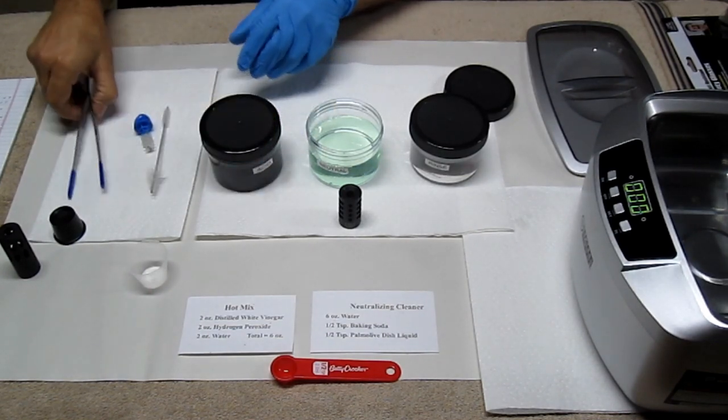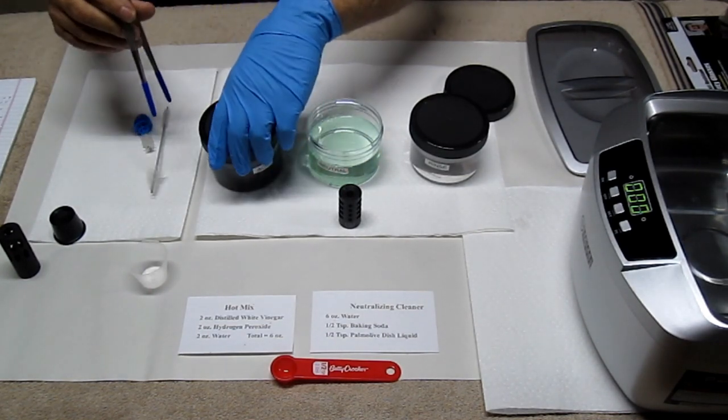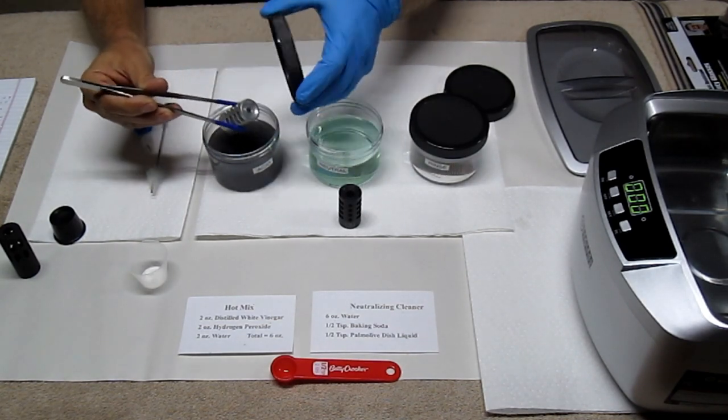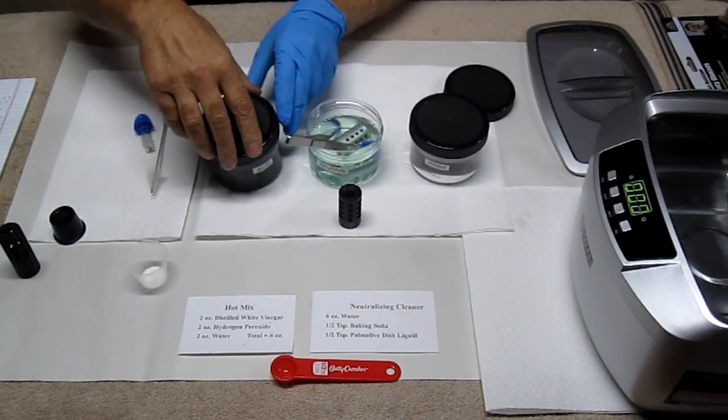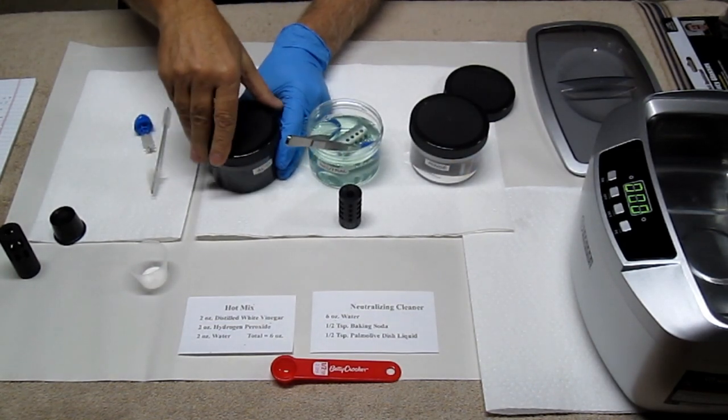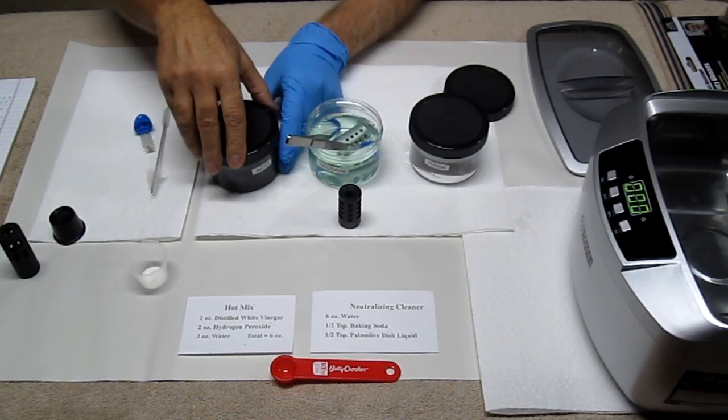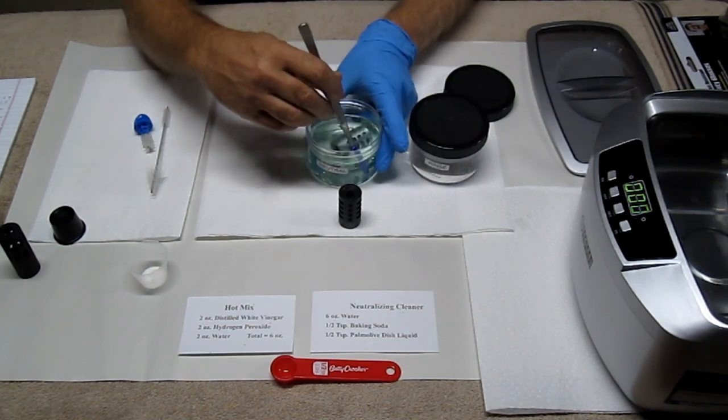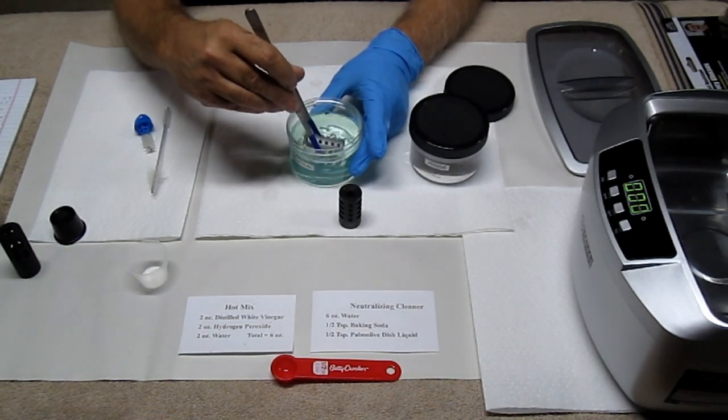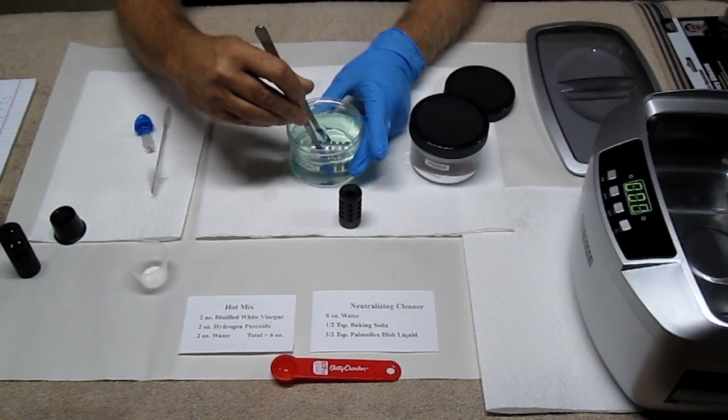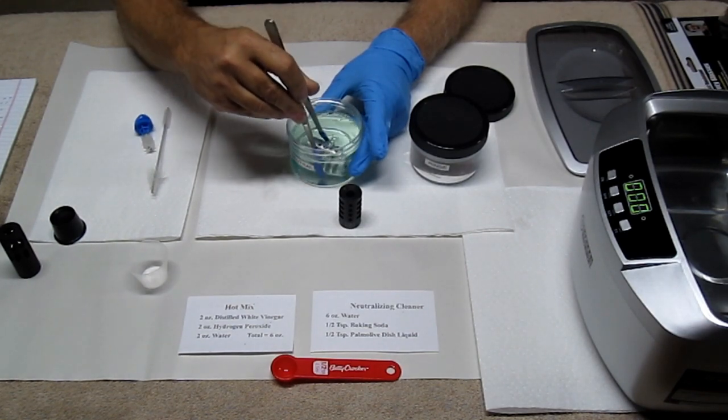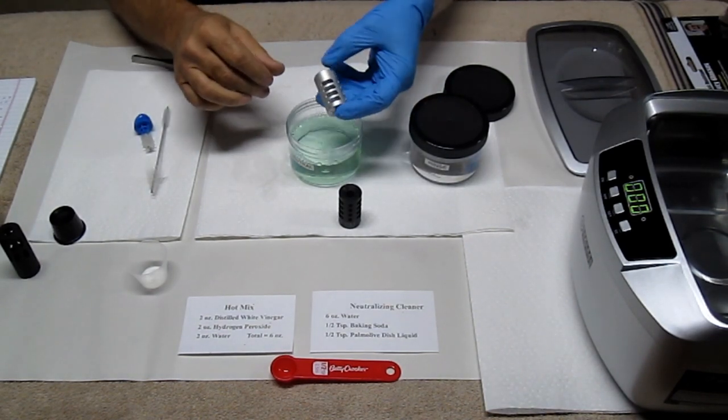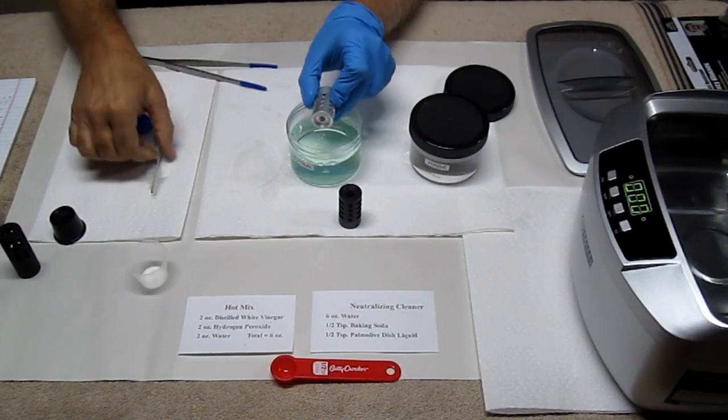Place it into our neutralizing solution. And I want to put this lid back on immediately. Place that in my neutralizing solution. Close the lid. I don't want to breathe this. And I want to set this out of the way. Okay, now that our compensator is neutralized, I can now grab it with my nitrile glove hand and I'm going to run my brush through.